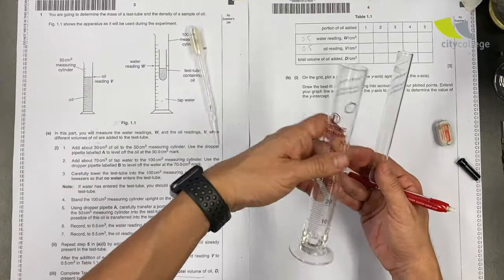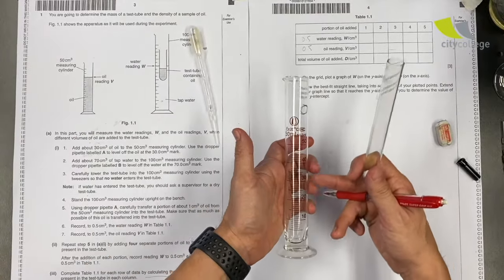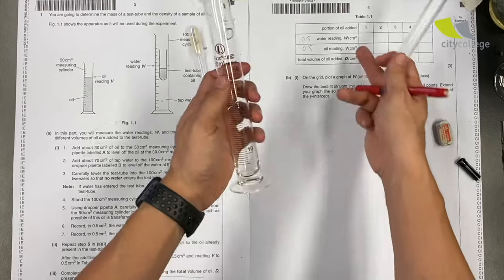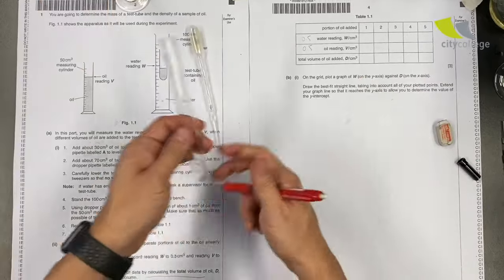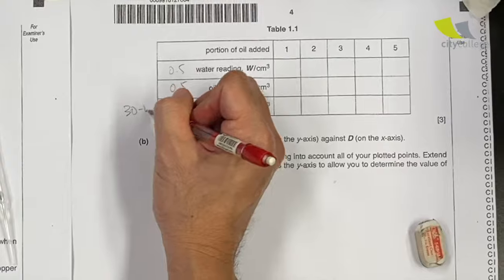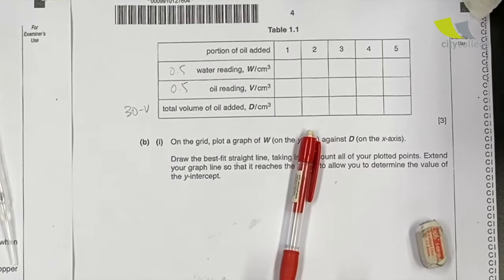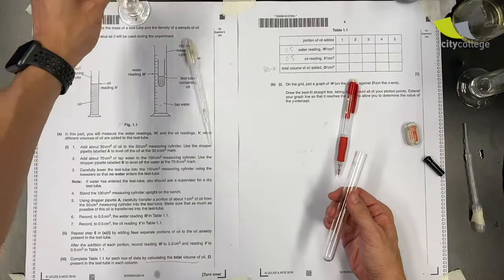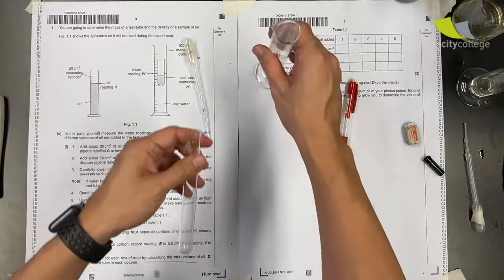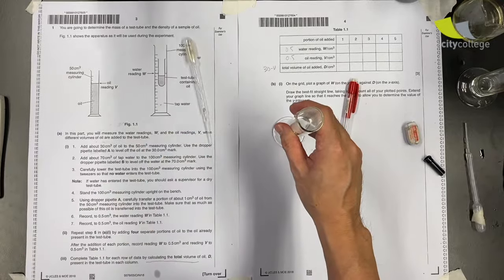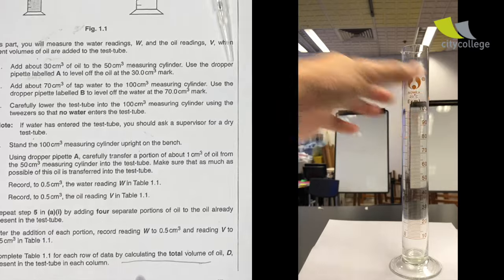So the oil going inside will be the original reading which is 30 minus the new reading V. So D is actually 30 minus V. I think I can start. We have a few cameras helping us. I'm moving to the cylinder cam now.